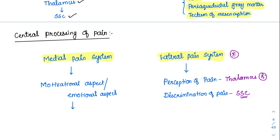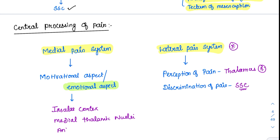The medial pain system handles the emotional aspect of pain. It goes to three places: the insular cortex, the medial thalamic nuclei, and the anterior cingulate gyrus. The anterior cingulate gyrus and some thalamic nuclei are also involved in the limbic system, which is concerned with emotions. So the emotional aspect of pain is perceived by the anterior cingulate cortex. This is how the central processing of pain happens.